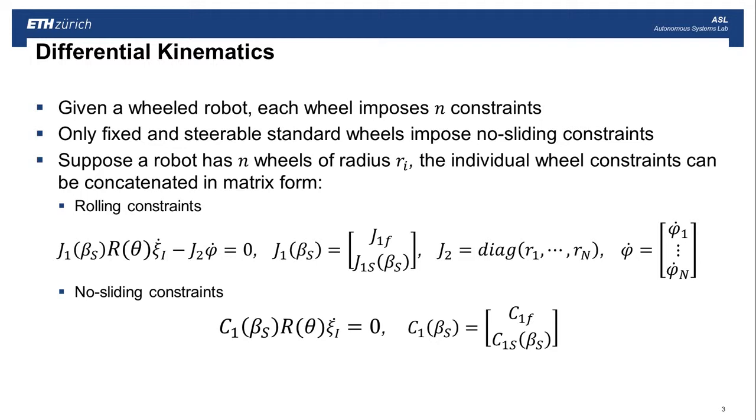Now, given a wheeled robot, each wheel imposes N constraints, but only fixed and steerable standard wheels impose no sliding constraints. So in this segment, we want to look at suppose a robot has N wheels. And each wheel indexed by i has a radius ri, then the individual wheel constraints can be concatenated into matrix form.